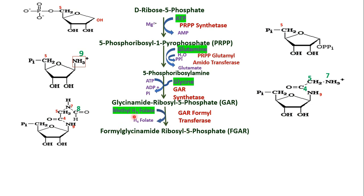In the next step, methyl tetrahydrofolate gives its formyl group to GAR — a formyl transferase reaction occurs. So instead of glycine amide, it becomes formyl glycine amide ribosyl 5-phosphate. On the 8th carbon of the purine ring, a formyl group is added. The product is formyl glycine amide ribosyl 5-phosphate, and the enzyme is GAR formyl transferase.